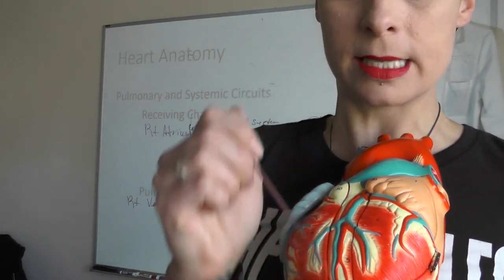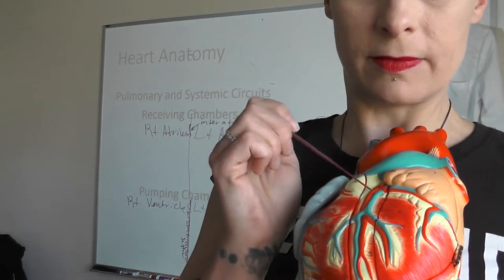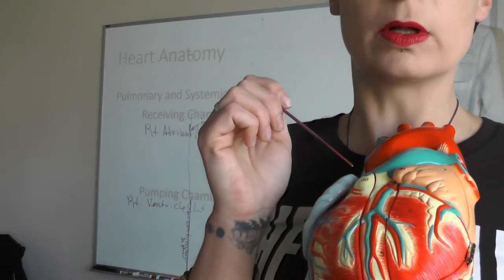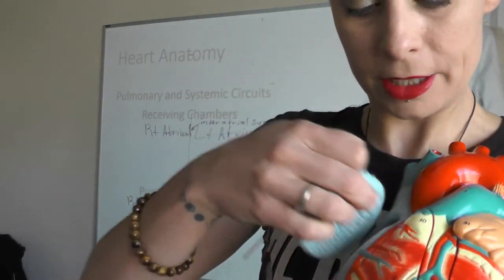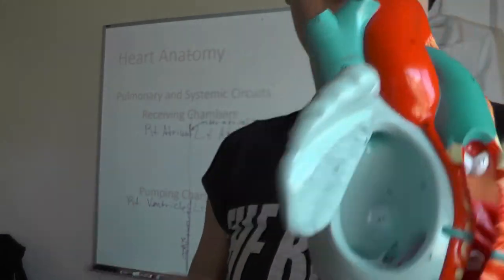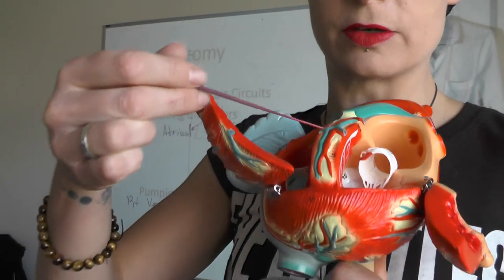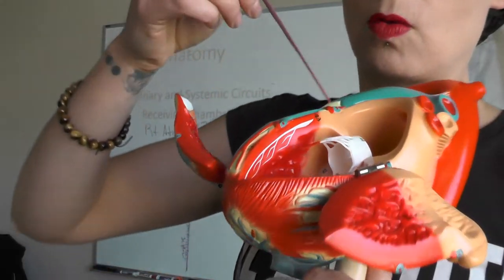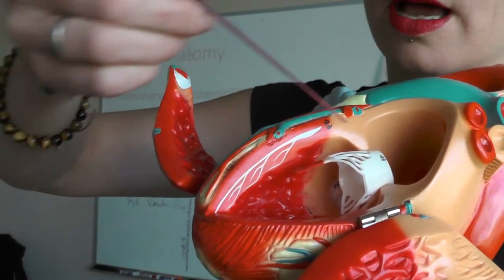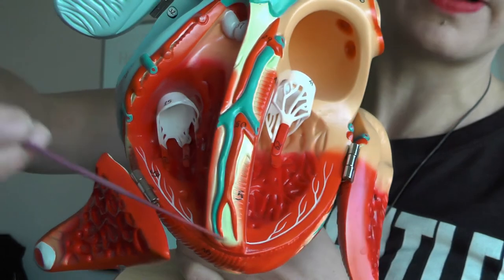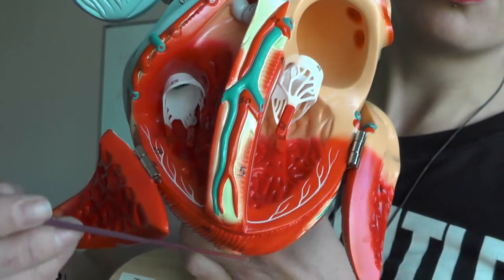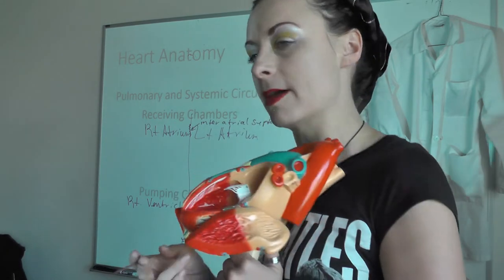Looking at the interventricular septum on the model, we can see the interventricular sulcus, which contains the anterior interventricular artery. Its companion vessel is the great cardiac vein. On the model you can see the left ventricle, right ventricle, left atrium, and right atrium. You can't really see the interatrial septum, but you can see the interventricular septum. This region contains the left and right bundle branches, which lead into the Purkinje fibers — part of the subendocardial conducting network. These cells conduct action potentials that help myocardial cells contract.